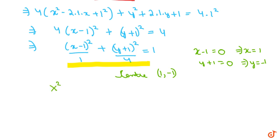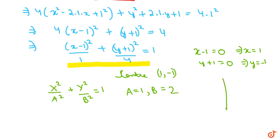Comparing with the standard form x²/a² + y²/b² = 1, we identify a = 1 and b = 2. Since b > a, this is a vertical ellipse.